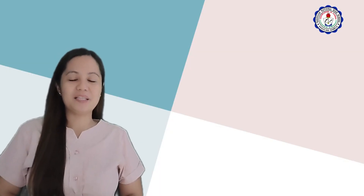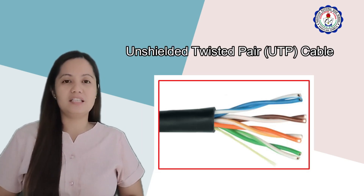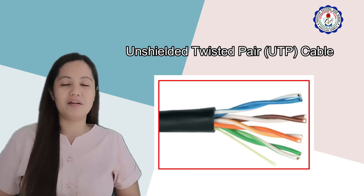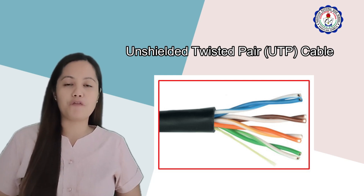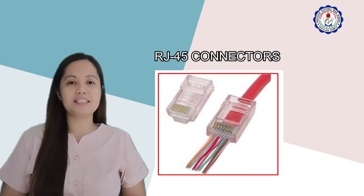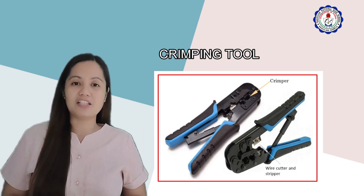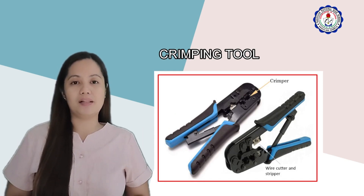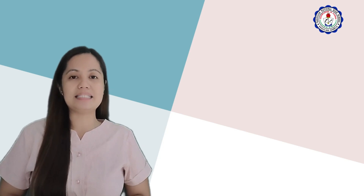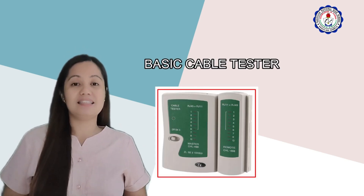Here are the materials to be used in making Ethernet cable. We have the UTP cable, which is the most popular and generally the best option for school networks. We also have the RJ45 connectors. Next is the crimping tool, which is used to attach the connector to the cable. And the last one is the cable tester, which is used to test the cable.